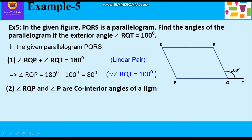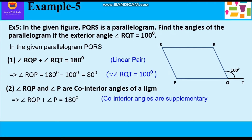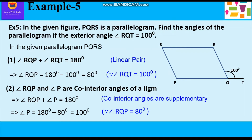Now let us find angle P. We can see that angle RQP and angle P form co-interior angles of a parallelogram and they are supplementary, meaning their sum is 180 degrees. So angle RQP plus angle P equals 180 degrees. Therefore angle P equals 180 minus 80, which is equal to 100 degrees.